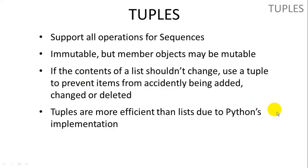Now let's talk about tuples. So tuples support all of the operations for sequences. But tuples are immutable. So member objects inside a tuple may be mutable. For example, you may have a list inside of a tuple. It could be one of the items in your tuple. That list is still mutable. You can still change and add and delete item from the list. But you cannot delete the list itself from your tuple. So it's a little confusing. I'm going to show some examples in a second. If the contents of a list shouldn't be changed, then you can use a tuple. That's what tuples are used for. It's useful when you have a constant set of values that are not going to be changed that you want to use throughout your program. And tuples are more efficient than lists due to how Python implements them.